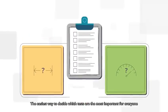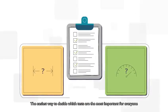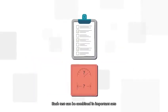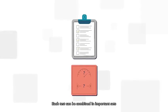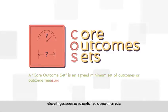The easiest way is to decide which tests are the most important for everyone. Each test can be combined in important sets. These important sets are called core outcome sets.